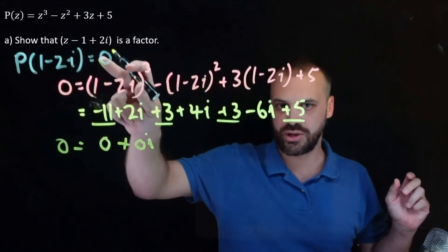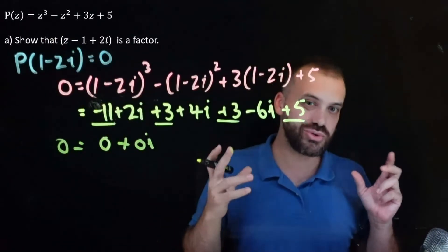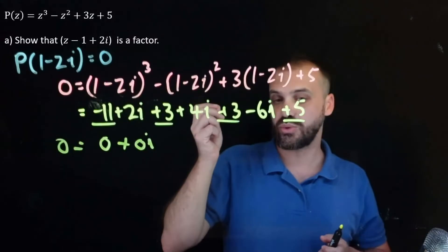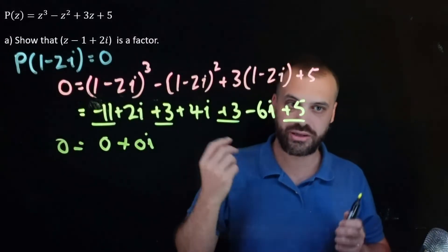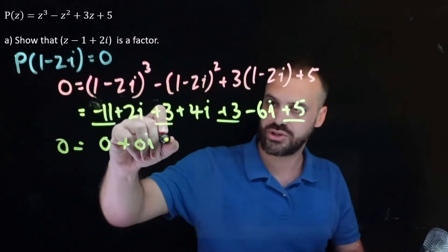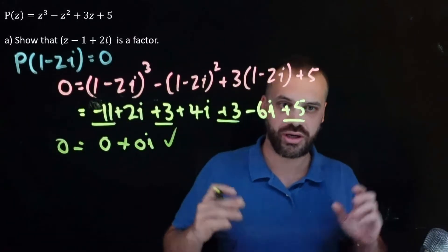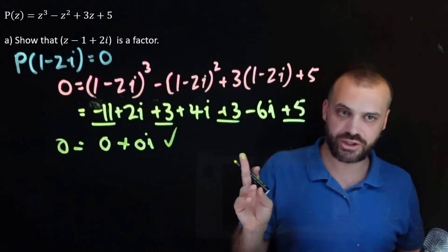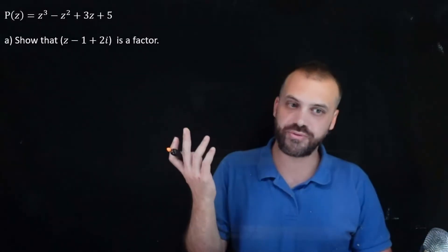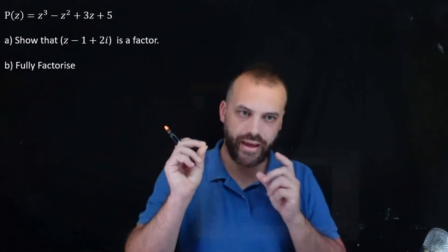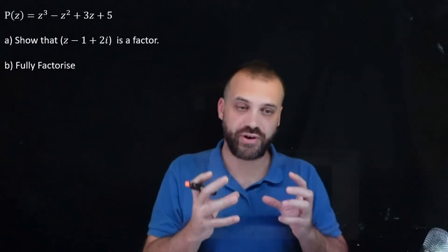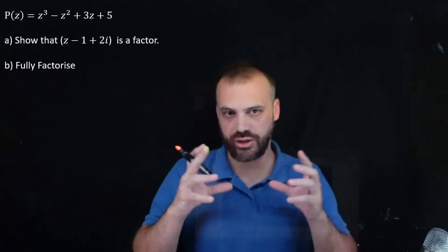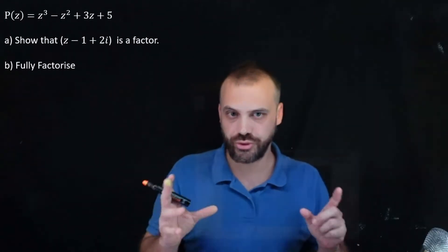I've shown that z minus 1 plus 2i is a factor because 1 minus 2i is a solution. Part A is done. Let's move to part B, which tells us to fully factorize — and here's where we get to use our conjugate root theorem.